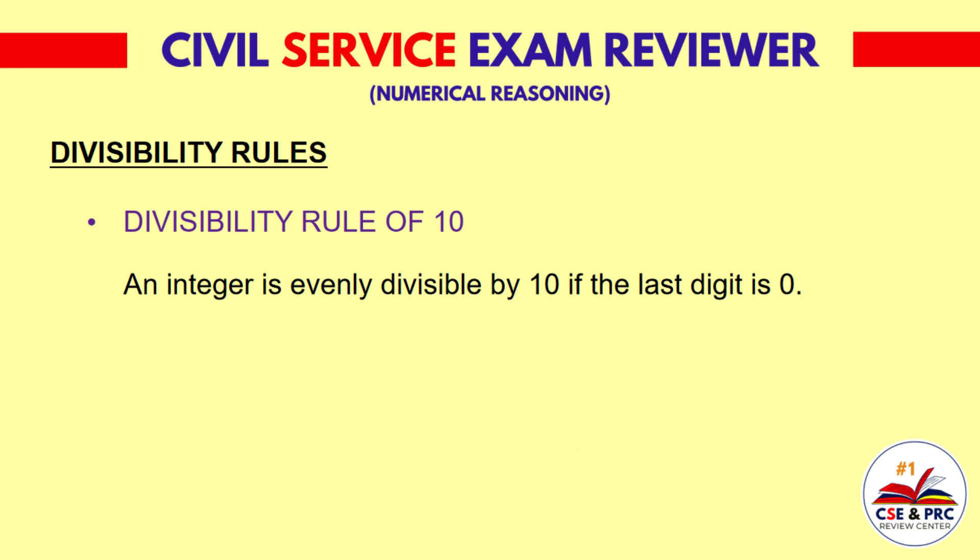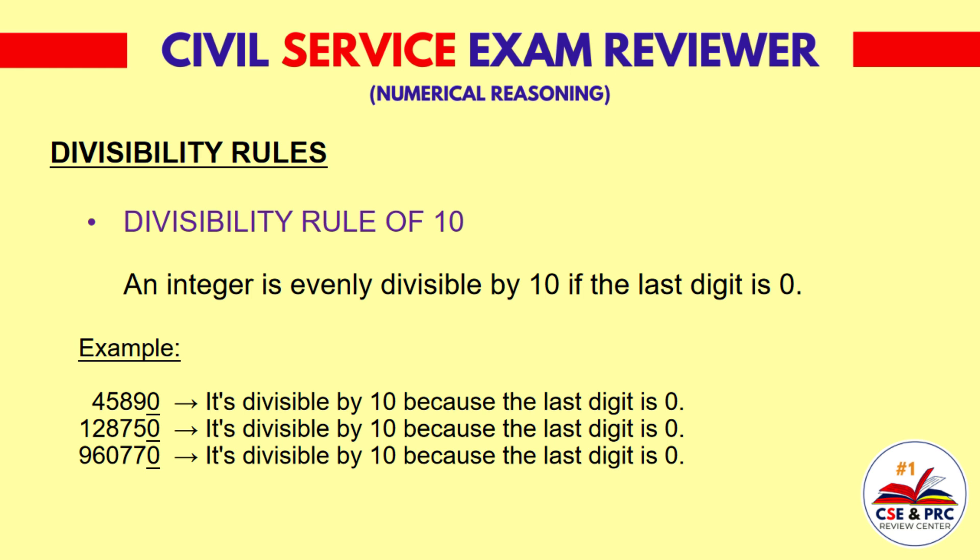Divisibility Rule of 10: An integer is evenly divisible by 10 if the last digit is 0. For example, 45,890 is divisible by 10 because the last digit is 0. 128,750 is divisible by 10 because the last digit is 0. 960,770 is divisible by 10 because the last digit is 0.